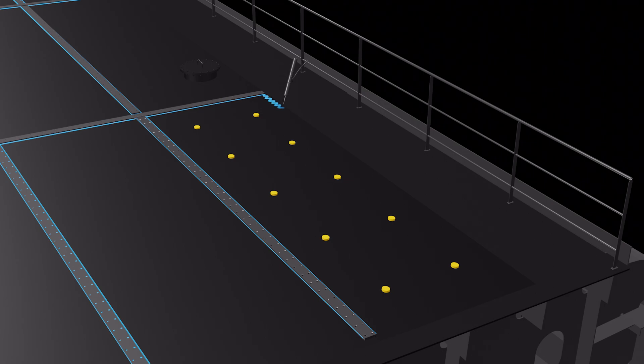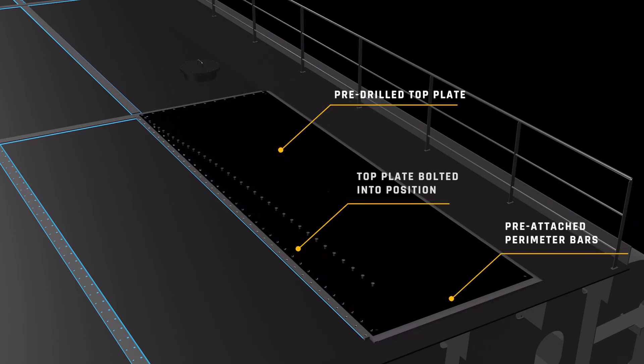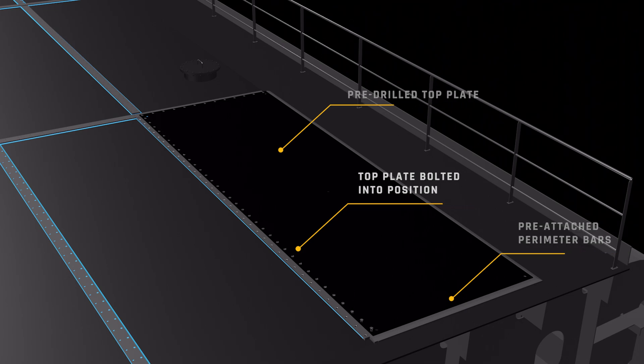To form the cavity boundaries, structural adhesive bonds the perimeter bars to the existing deck. The SPS top plate's countersunk holes align with those in the deck-mounted perimeter bars and are bolted for full structural capacity.